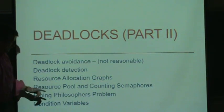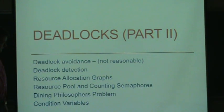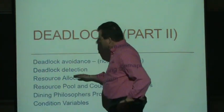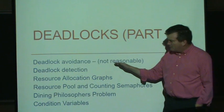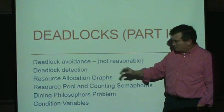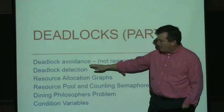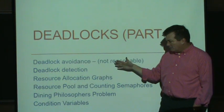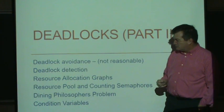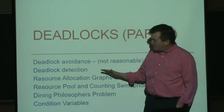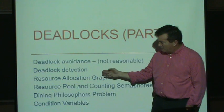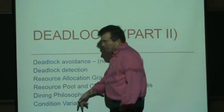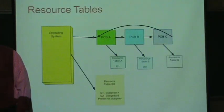Continuing our discussion on deadlocks, what we talked about last class was trying to design a system that cannot possibly deadlock — we were trying to avoid deadlocks. We left off saying it might not be reasonable for a big operating system like Windows or Linux to do that, so it might be better to detect deadlocks when they happen and then fix them.